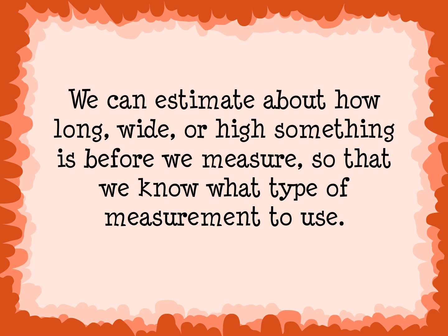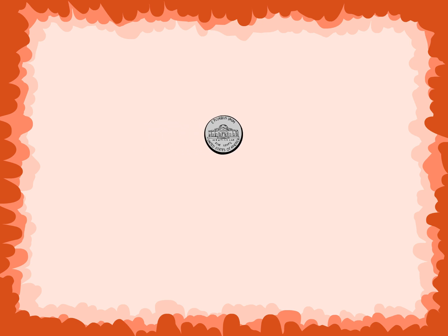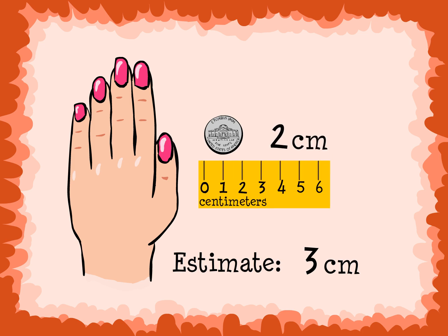We can estimate about how long, wide, or high something is before we measure, so that we know what type of measurement to use. We are estimating the width of a nickel. I notice that the nickel is very small, so we can use centimeters to measure it. I would estimate about 3 centimeters. The actual width of the nickel is 2 centimeters. Notice that the edge of the nickel is lined up with the end of the ruler.